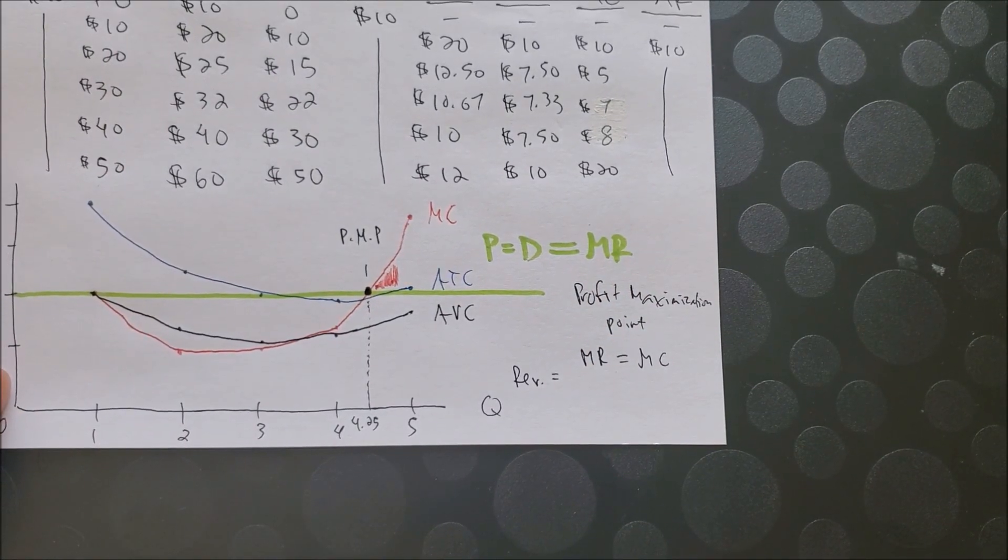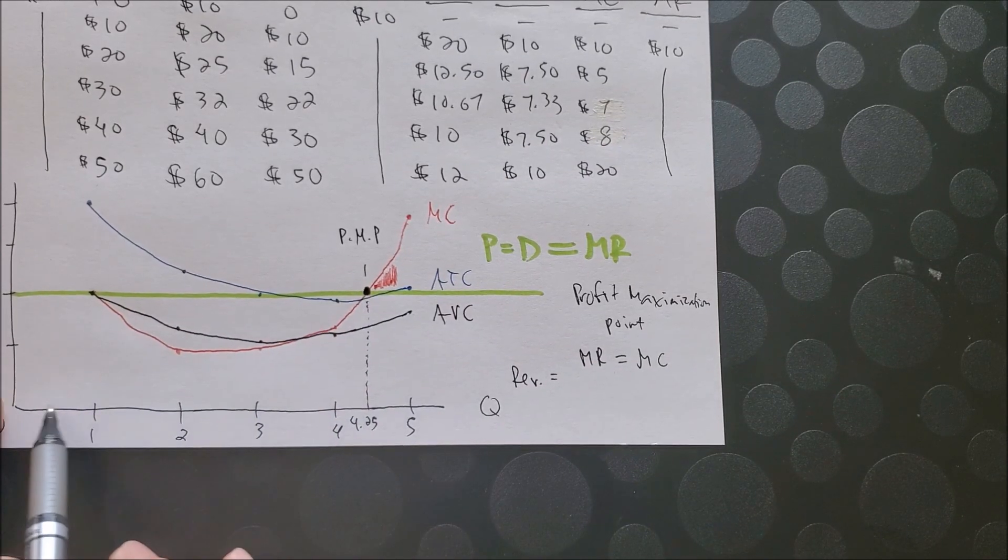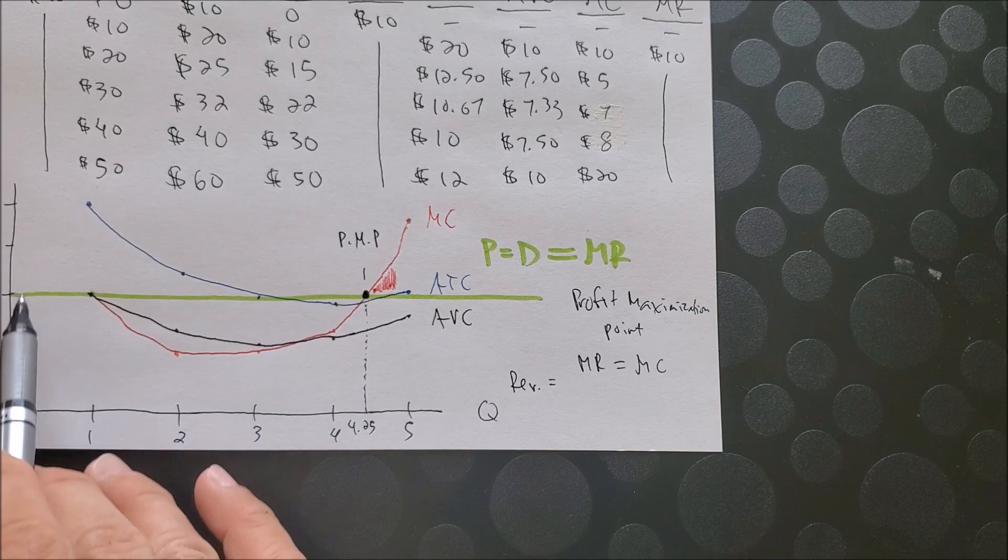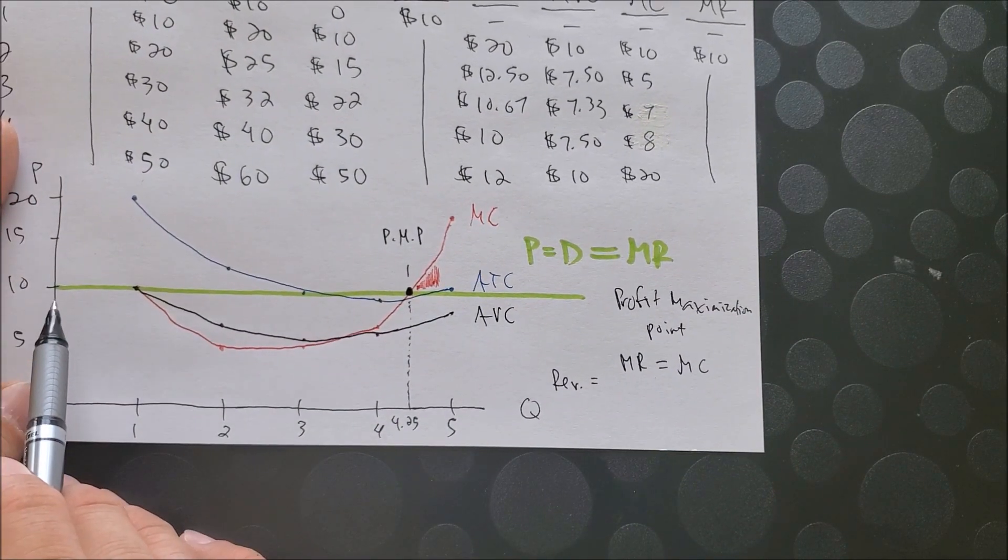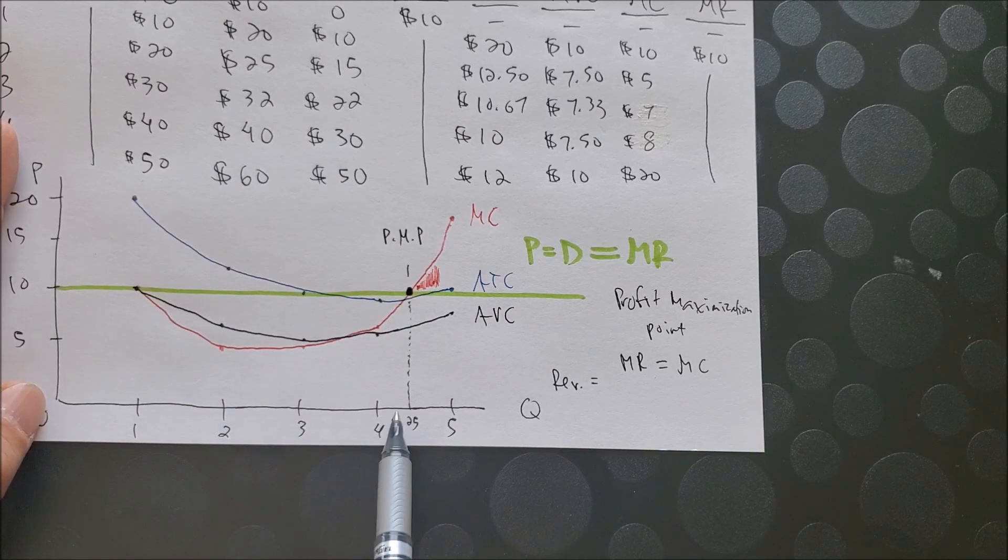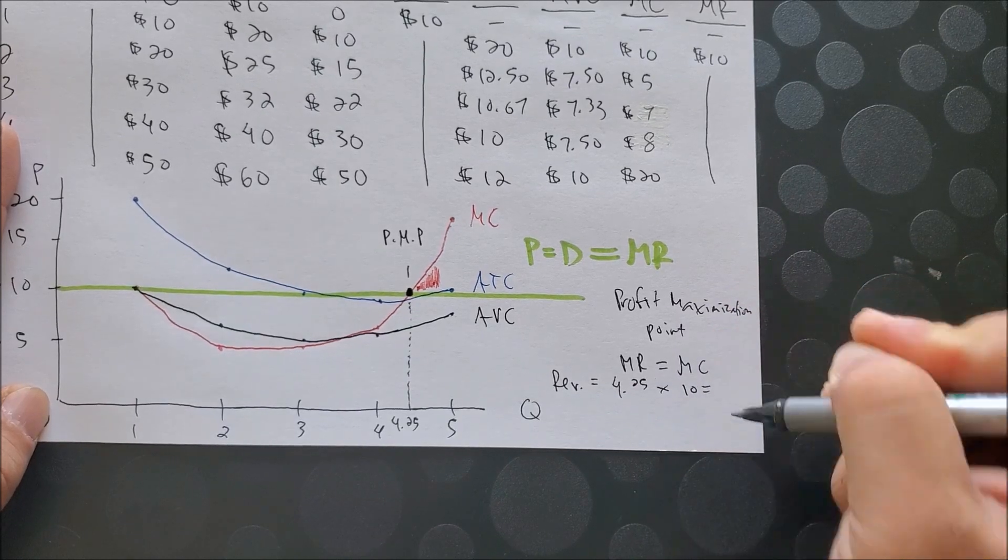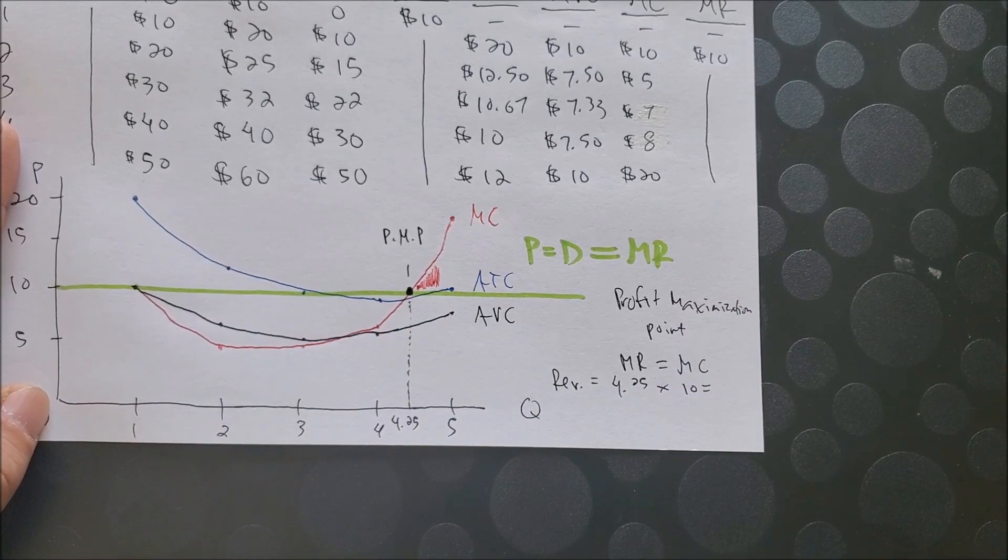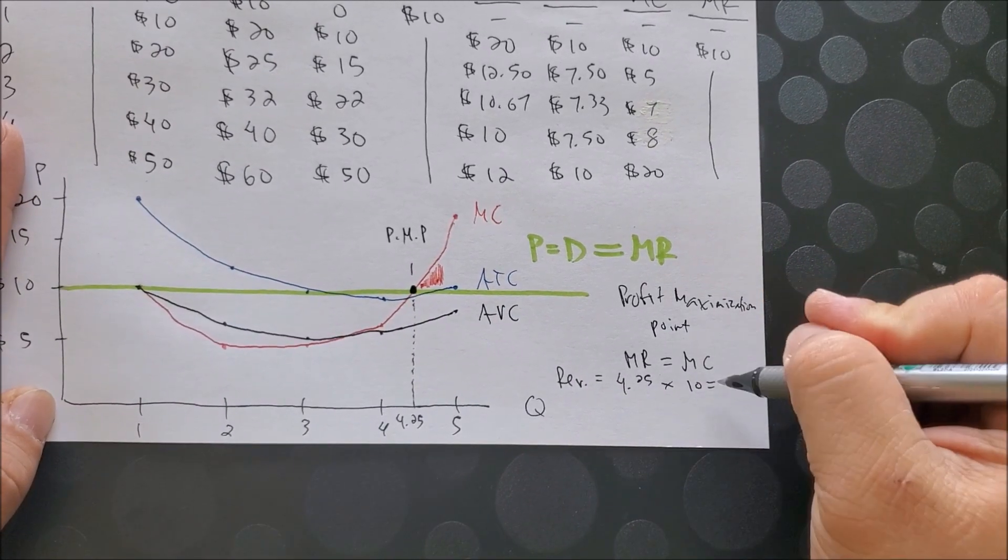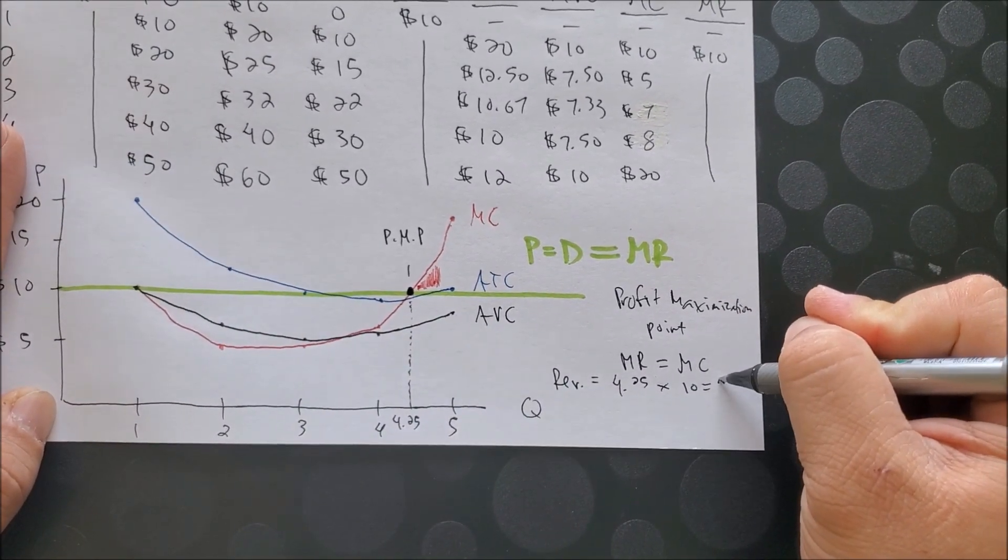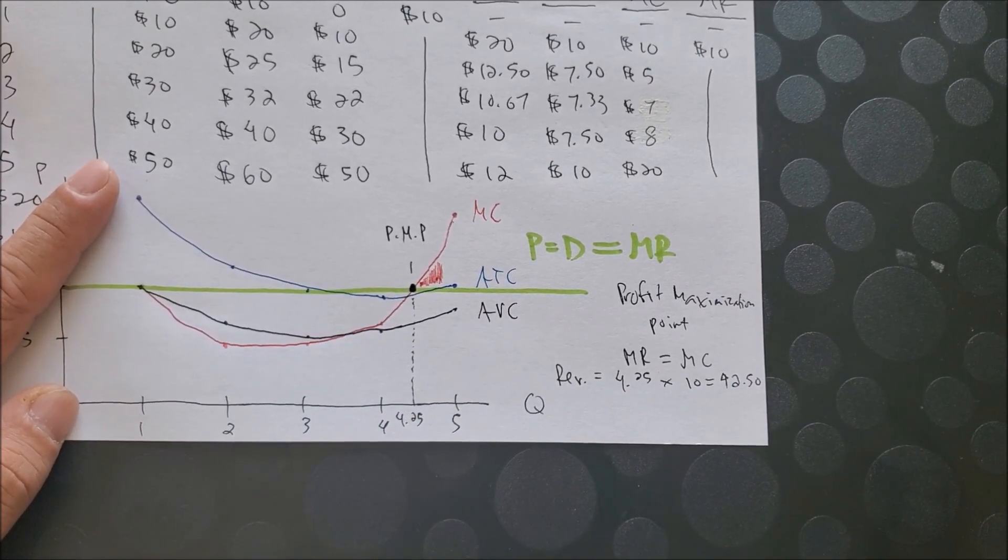And we know that in algebra, we have a rectangular shape, which has an area of length times width. The length is 4.25, and the width is 10. And then now we can go ahead and calculate that to get revenue. We should get $42.50 as our revenue.